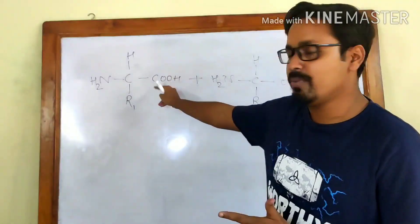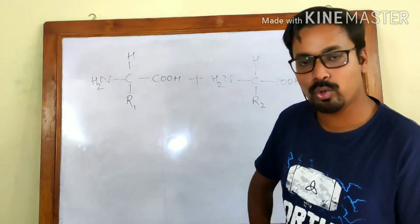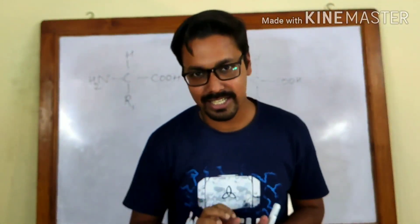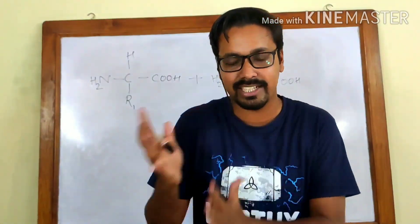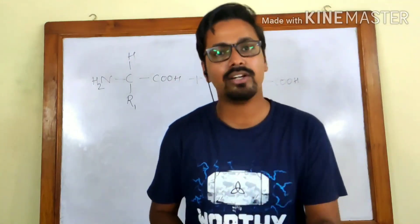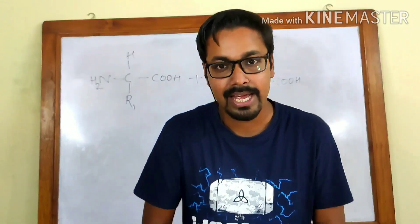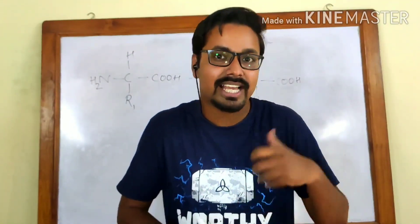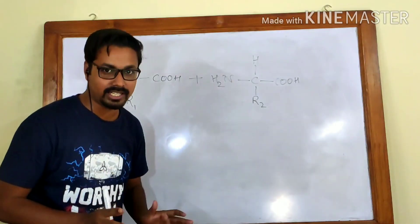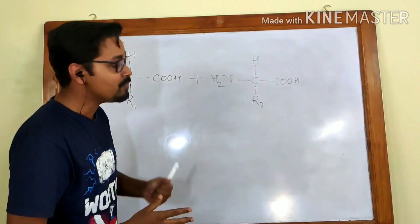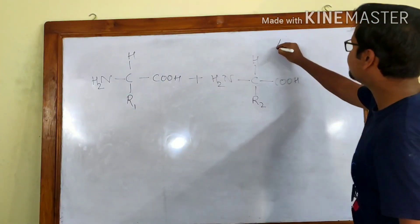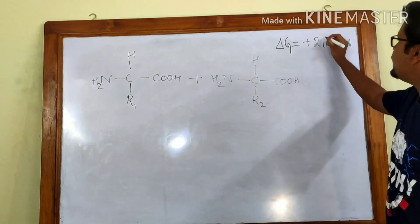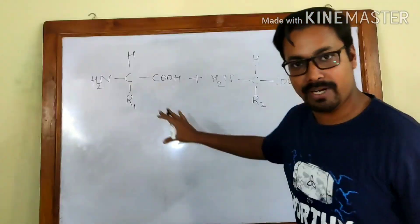Before getting into the mechanism, we must know that this bond formation is a dehydration reaction — we remove a hydrogen and a hydroxide, so a complete water molecule is removed. This reaction is also an endergonic reaction. In endergonic reactions we have to provide energy, and the free energy change ΔG is always positive. In exergonic reactions energy is released and ΔG is negative. For peptide bond formation, ΔG is always +21 kilojoules per mole.